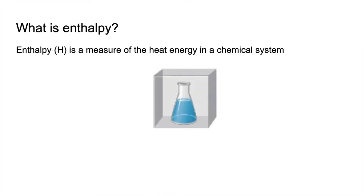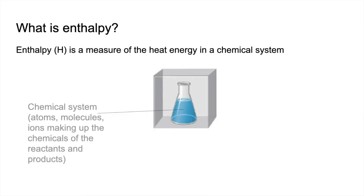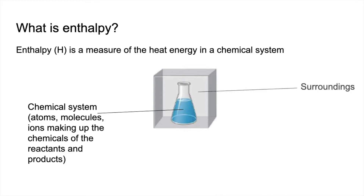So just quickly talk through this diagram. We've got two key things: the chemical system, which is basically the atoms, the molecules, the ions that make up the chemicals of the reactants and products, and then around the outside of all of that we've got what's called the surroundings.